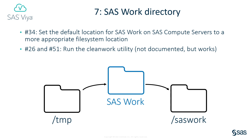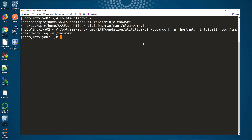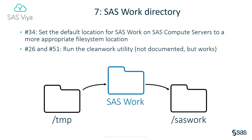Number 7: SAS Work Directory. The default location for SAS Work Libraries on Unix and Linux deployments is the temp directory, and on Windows it's the user's home directory. These locations are sure to exist and the user will have write access to them, but they're not the ideal place to store temporary data. Task 34 in the checklist explains where to learn how to change the SAS Work Directory path to a better location, ideally faster dedicated storage optimised for large sequential reads and writes. The Clean Work Utility may be familiar to administrators of SAS 9 deployments, and it's also included with SAS Viya. Abandoned SAS Work Directories left behind by abruptly terminated SAS sessions seem to be much less of an issue in SAS Viya than they sometimes were in earlier versions of SAS, but it's worth familiarising yourself with this utility just in case. Tasks 26 and 51 cover how and when to use it.